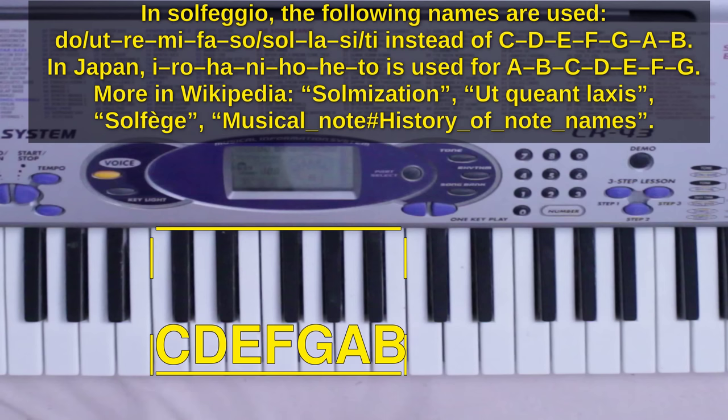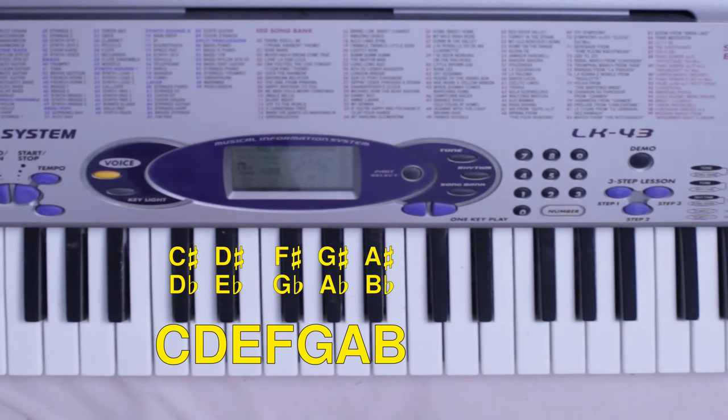C, D, E, F, G, A and B are played using white keys, and the black keys are sharps and flats. Between C and D is the C sharp or D flat, and so on.